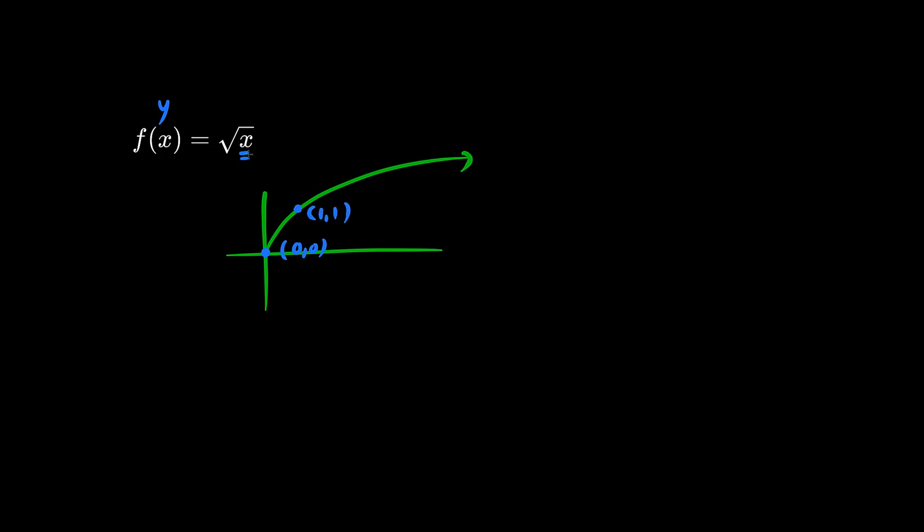(1,1) is another point. When we substitute x is 1, the square root of 1 is 1, so y equals 1. Similarly, (4,2) is another point on this graph. When x equals 4, the square root of 4 is 2.